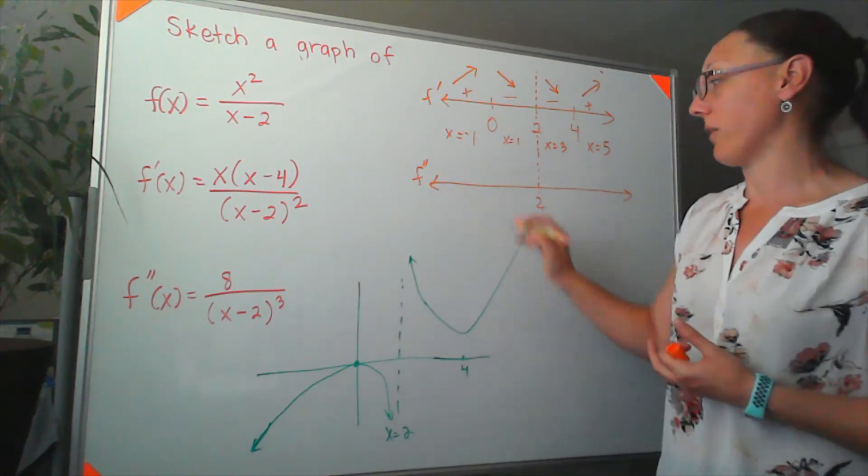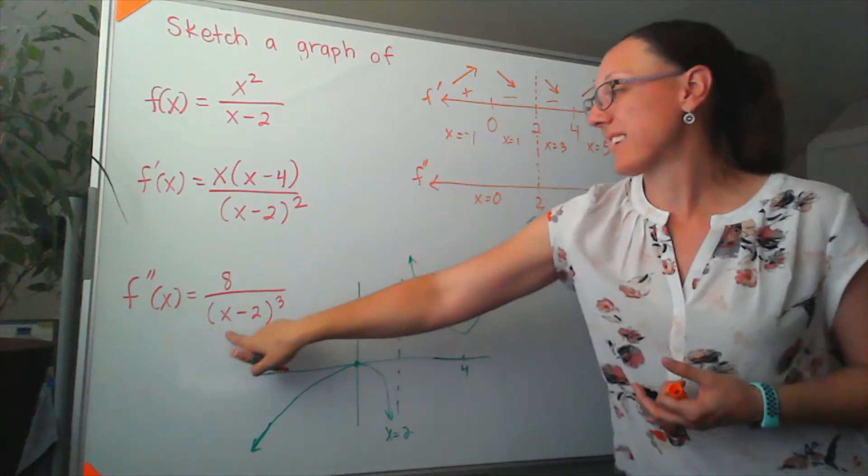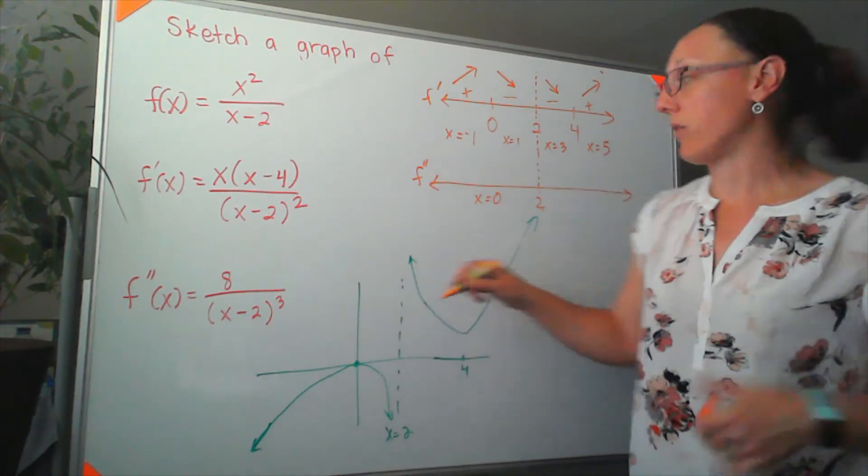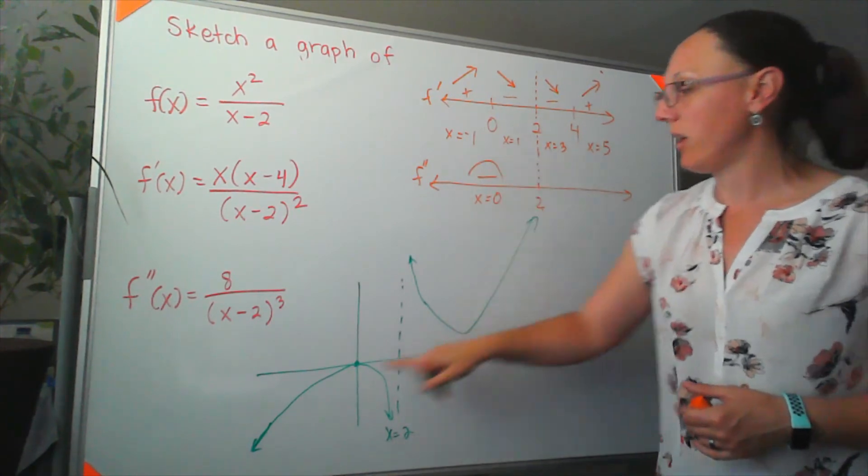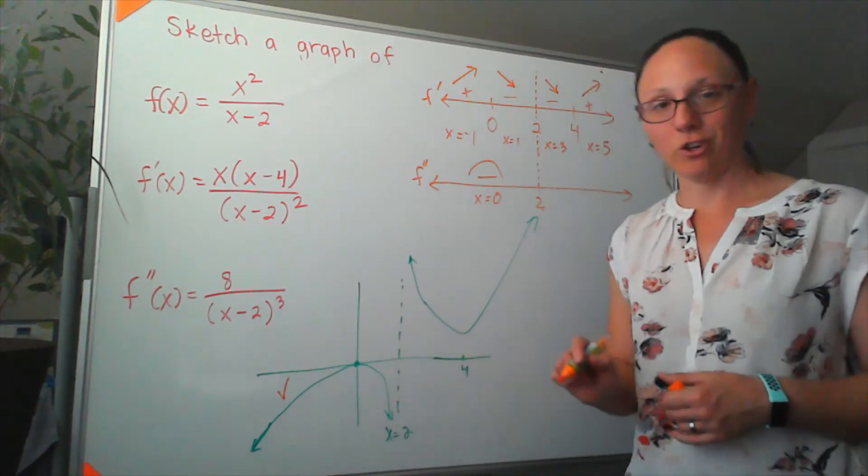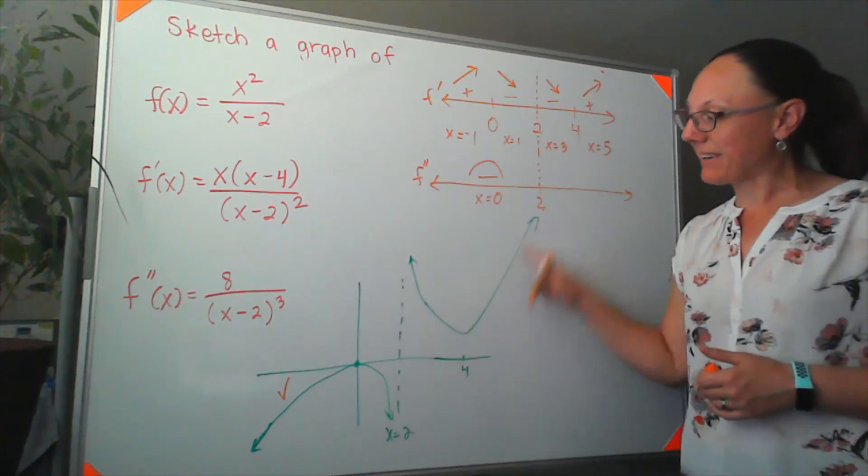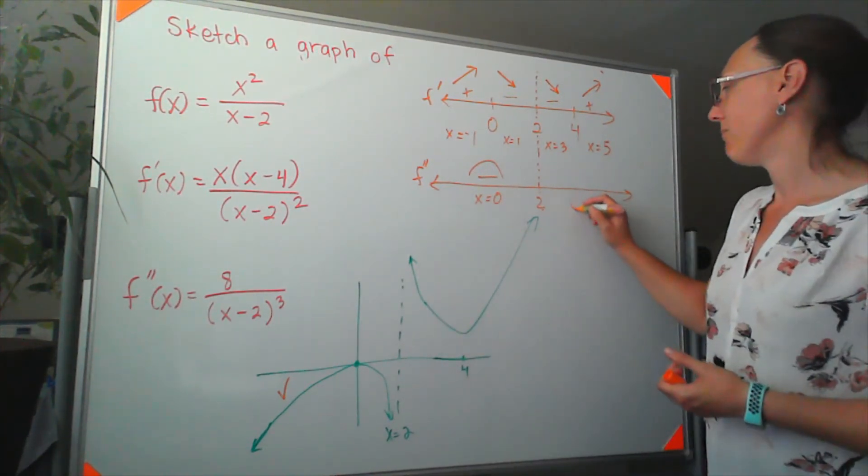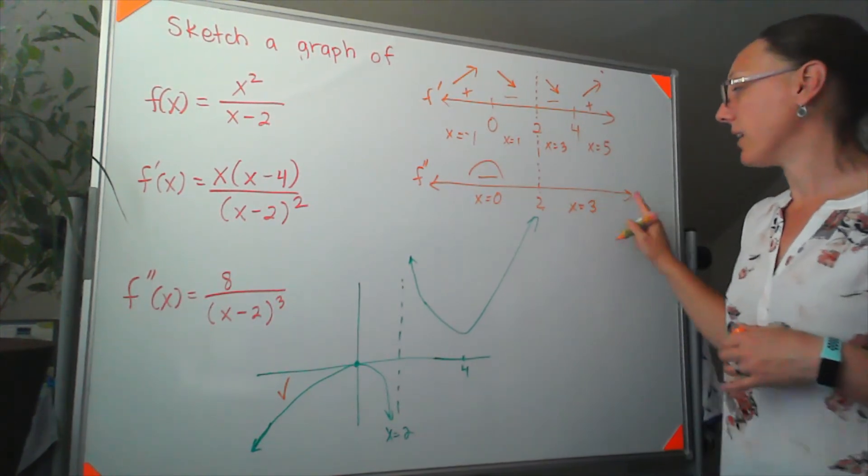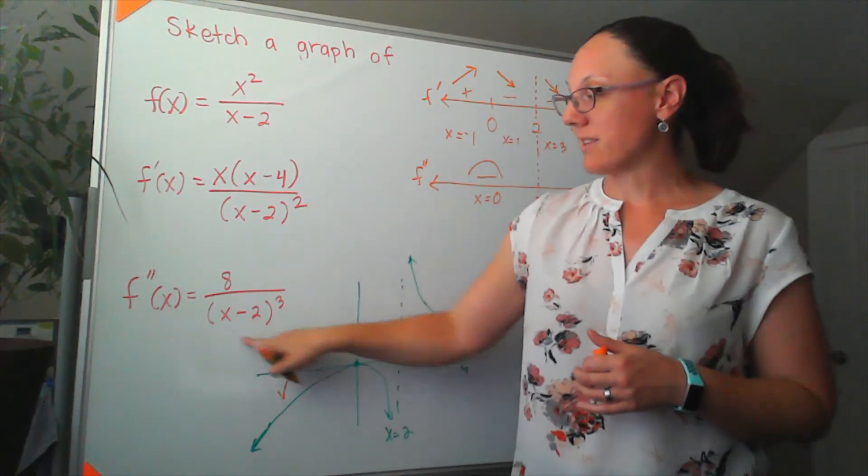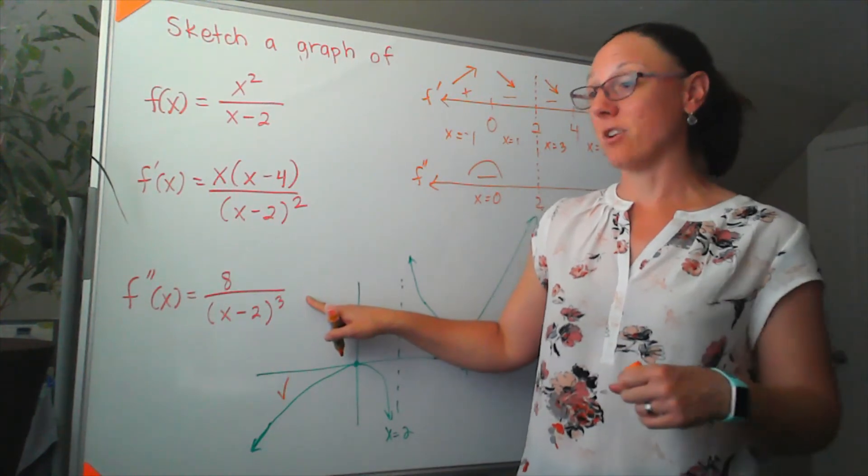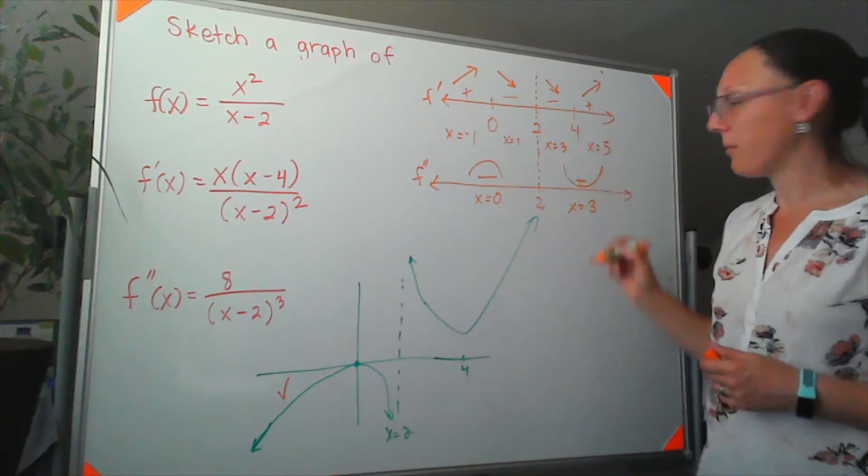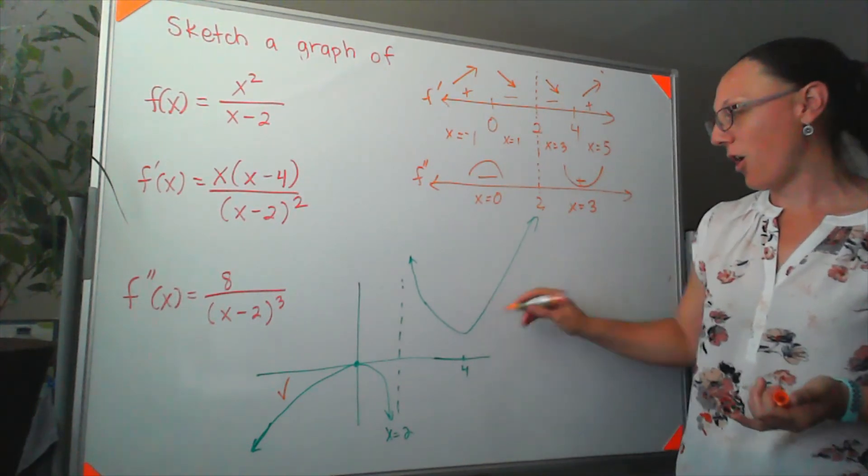So let's say I plugged in 0 for x. Well, negative 2 cubed is negative. 8 over a negative number. That's negative. We should be concave down. That matches our graph. Good for us. Over here, we're expecting to be concave up. So let's make sure that matches with the numbers. If I pick a number bigger than 2, let's say 3, to plug in. 3 minus 2 is positive. Cube that. It's still positive. 8 over a positive number. And we can make that concave up. It also matches this.